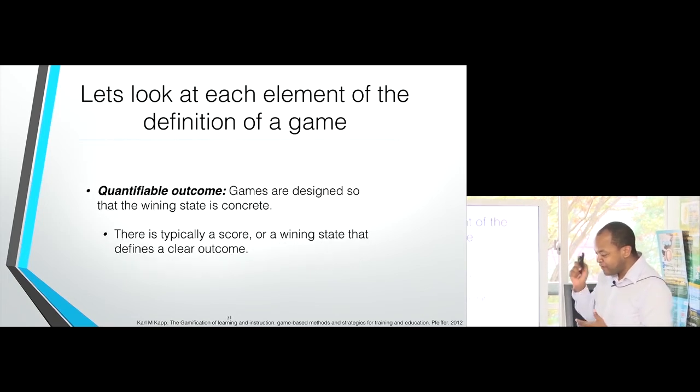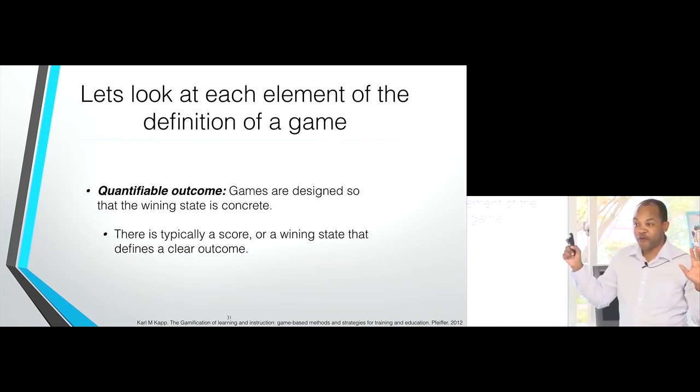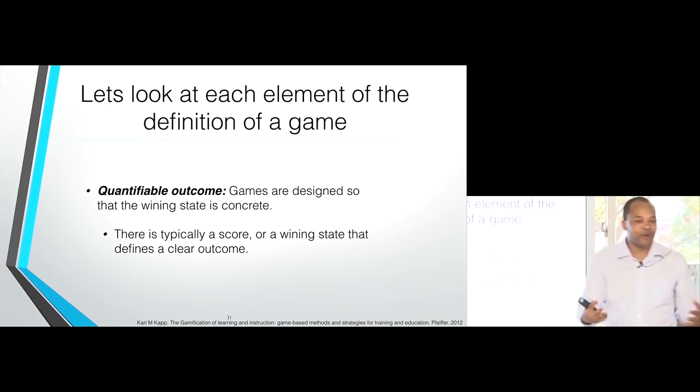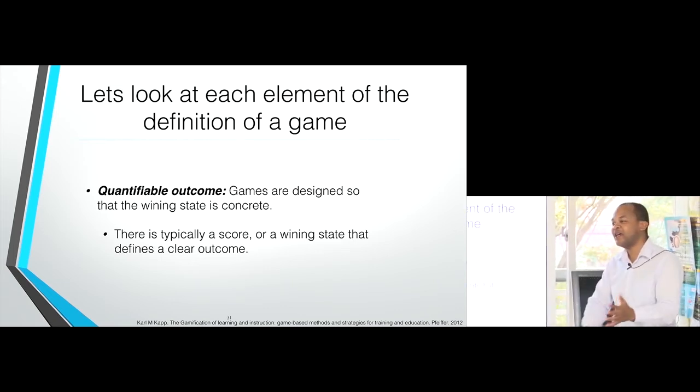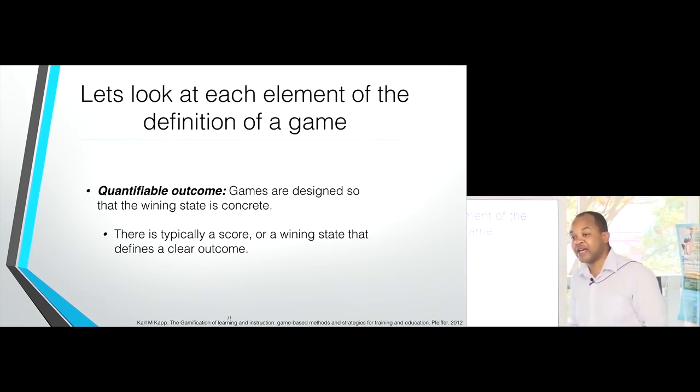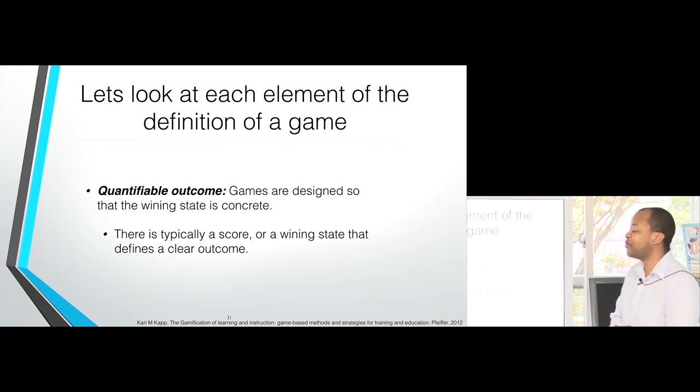Next, there's a quantifiable outcome. You always know when you've won. There's usually no doubt if you won or not. You just know because of your score, because of the outcome. It's either you die or you have another life or things like that. Or you can catch anything on Pokemon Go.